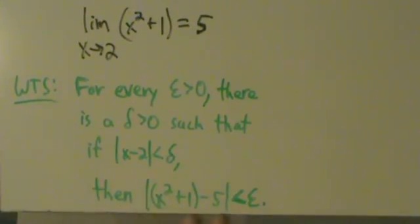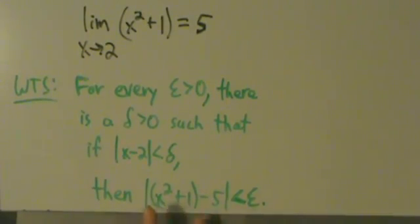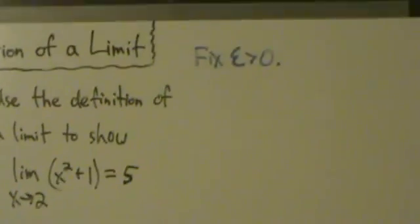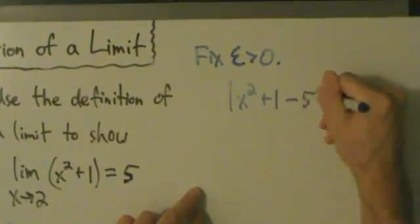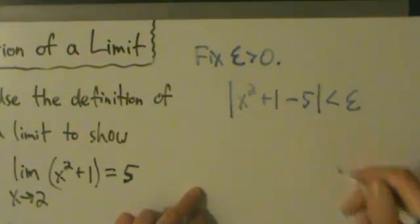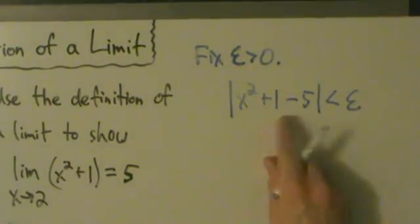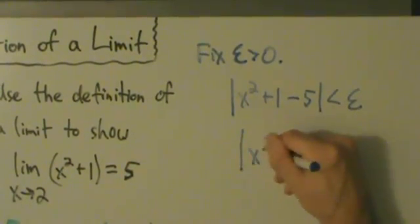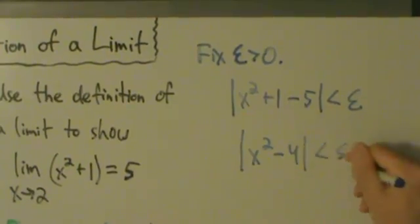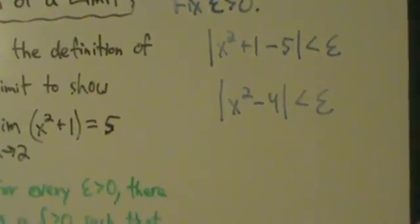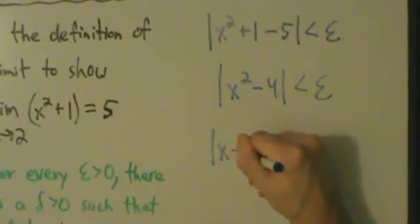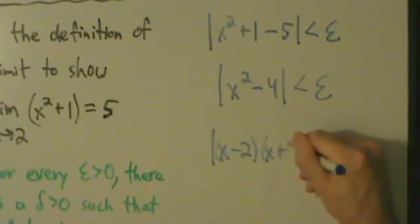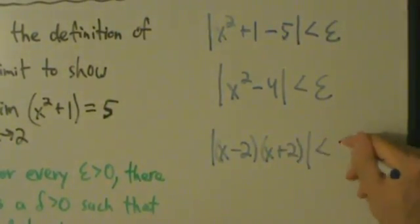So what we do first is take the expression and simplify it, just like in the first two examples. We can drop the parentheses and write: absolute value of x squared plus 1 minus 5, less than epsilon. Now x squared plus 1 minus 5 simplifies to x squared minus 4. And then we factor that: that's x minus 2 times x plus 2, absolute value less than epsilon.